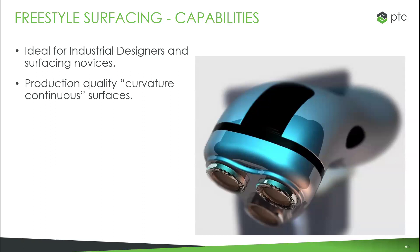The focus is on the shape rather than dimensioning every single piece — that can come later in the process. This is ideal for design engineers working on the industrial side, or even if you're new to surfacing. You don't have to be a surfacing expert to get great results. And you're still getting high-quality, production-ready surfaces — what we refer to as curvature continuous. Creo won't build out anything that can't be manufactured; you'll still get standalone manufacturable parts from your Freestyle surfaces.